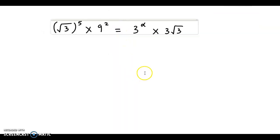So let us bring this 3 root 3 over here in the denominator. We would have 3 raised to alpha is equal to root 3 raised to 5 into 9 square upon 3 root 3.